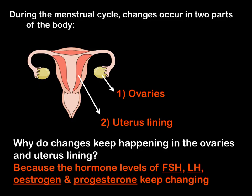As we've seen so far, changes are occurring in two parts of the body: the ovaries and the uterus lining. These changes are occurring because the hormone levels of FSH, LH, oestrogen, and progesterone keep changing.